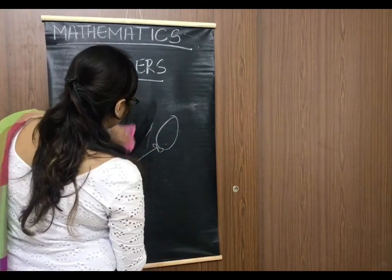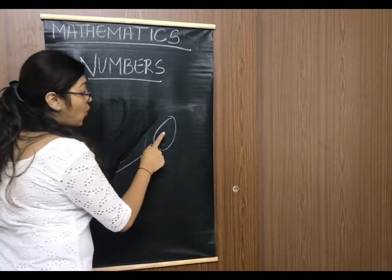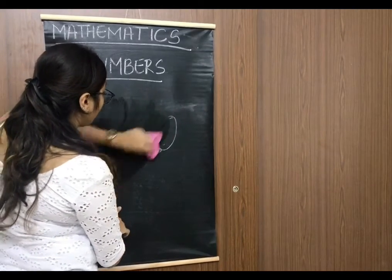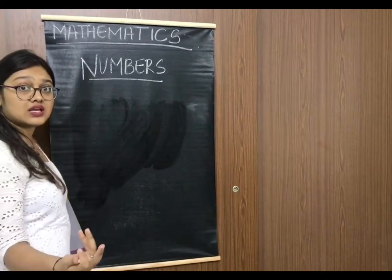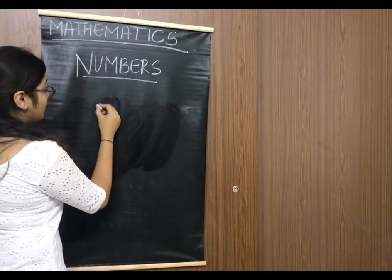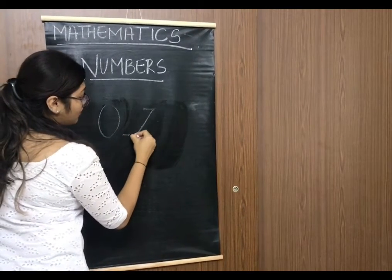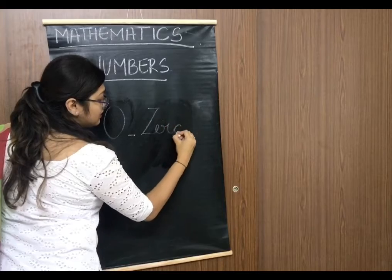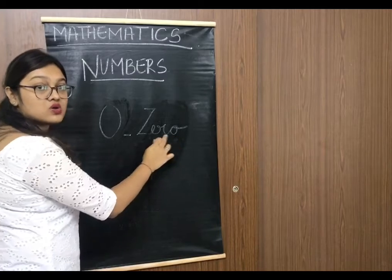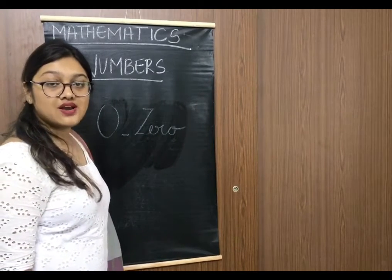One more balloon flew away. How many balloons are left? 1. This balloon also flew away. How many balloons are left? Nothing. What do you call it? Zero. Z-E-R-O. Zero. Did you understand students? Very good.